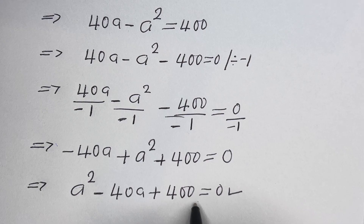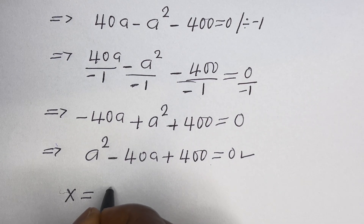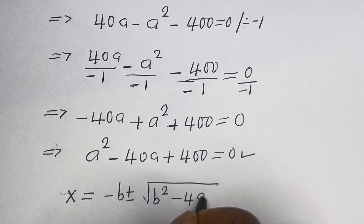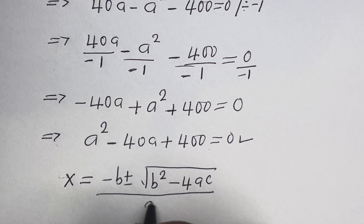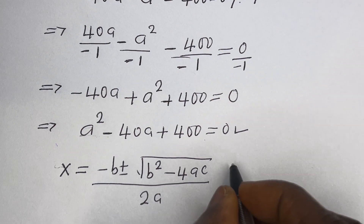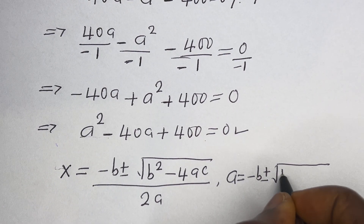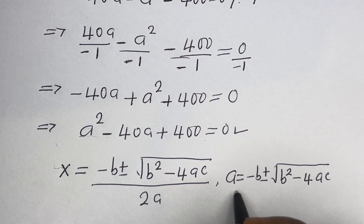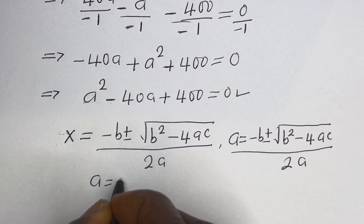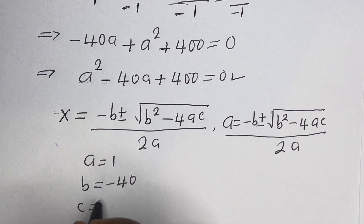This is a quadratic equation. Let us solve this using the quadratic general formula. From the quadratic general formula, X equals minus b plus or minus square root of b squared minus 4ac over 2a. Here we want to solve for A, so A equals minus b plus or minus square root of b squared minus 4ac over 2a. From this equation, a equals 1, b equals minus 40, and c equals 400.